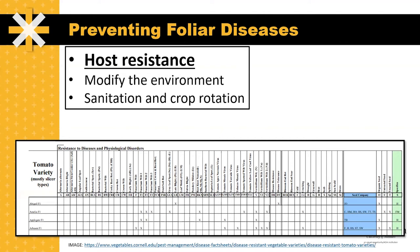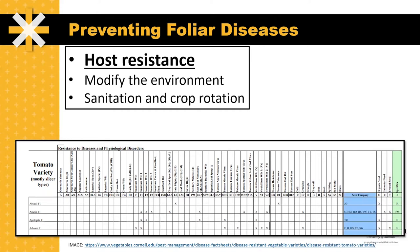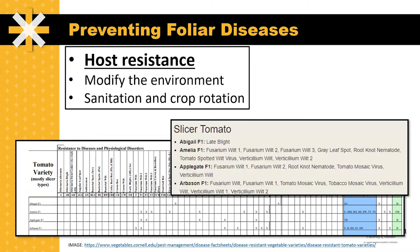In terms of host resistance, there's been extensive breeding of tomatoes to breed for resistance to certain diseases. Cornell University has some great information on disease resistance in tomatoes available in Excel and Word document formats, broken down into slicer tomatoes, cherry tomatoes, plum tomatoes, and more. Although grafting has been shown to be effective to prevent root-borne diseases like Fusarium wilt, grafting alone will not prevent the infection of foliar diseases of tomatoes.